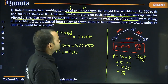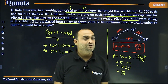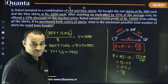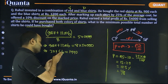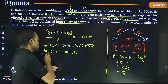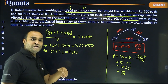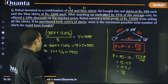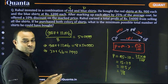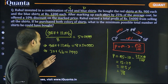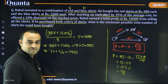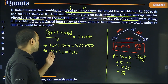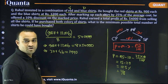Now we want the minimum possible total number of shirts, i.e., minimize R + B. This is only possible when we maximize B, because the coefficient of B is 4, which is bigger than the coefficient of R, which is 3.